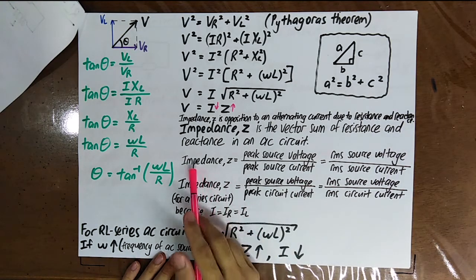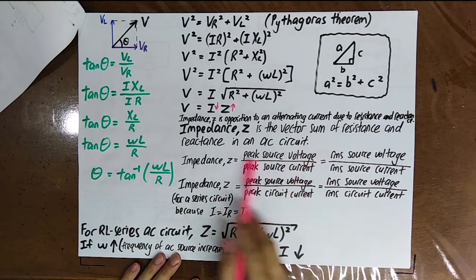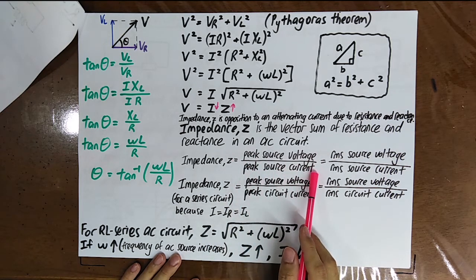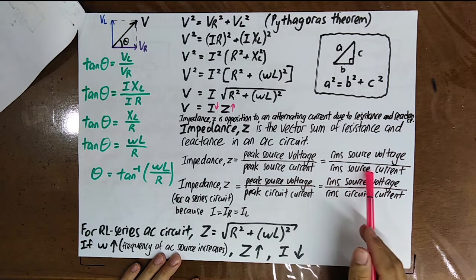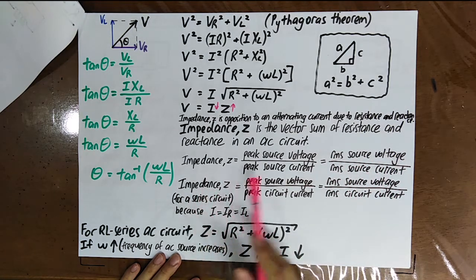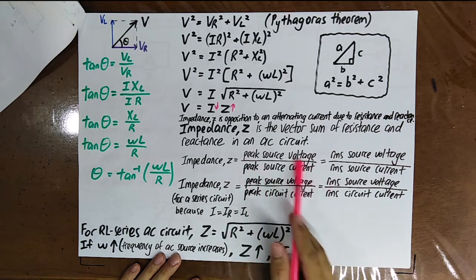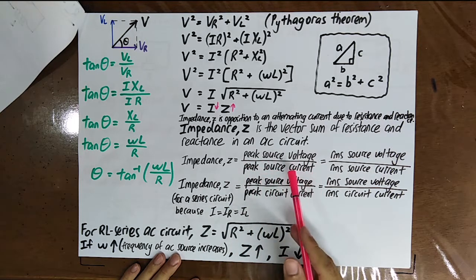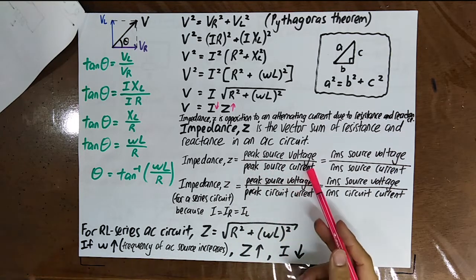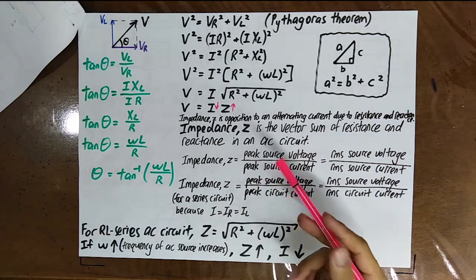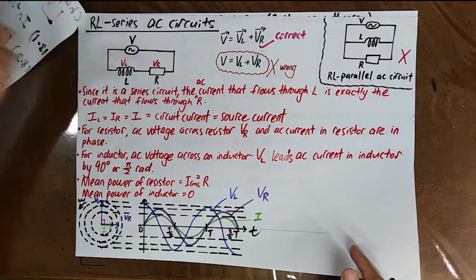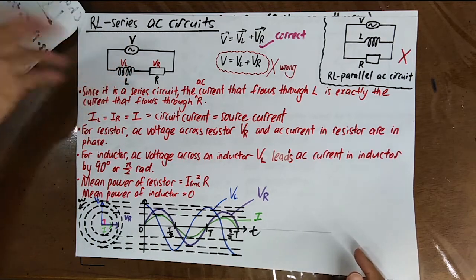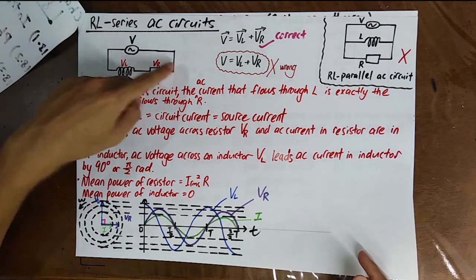Impedance Z equals peak source voltage over peak source current, which also equals RMS source voltage over RMS source current. Since it is a series circuit, the current through the inductor, the resistor, and the source are all the same.